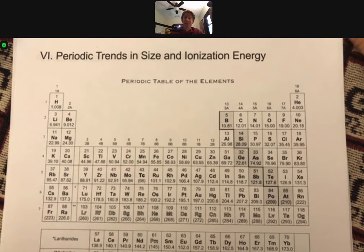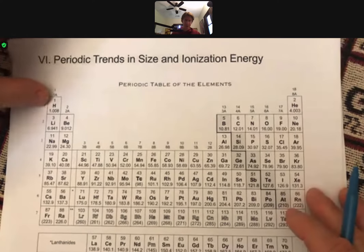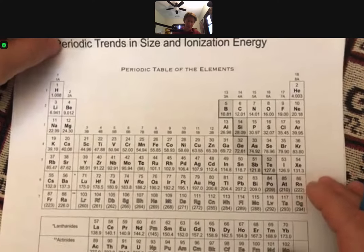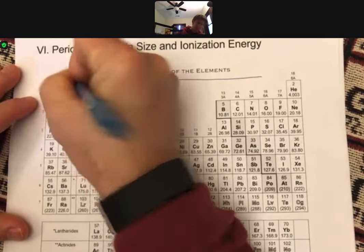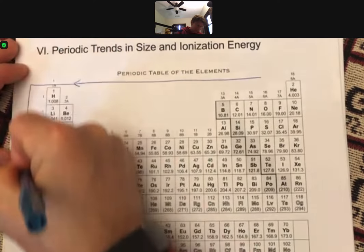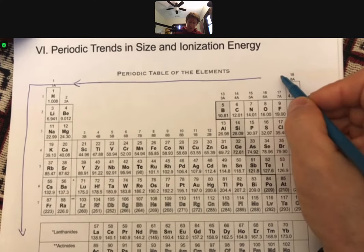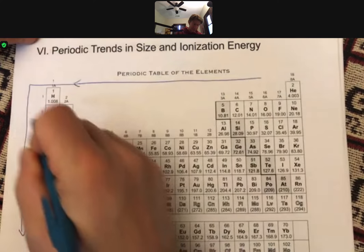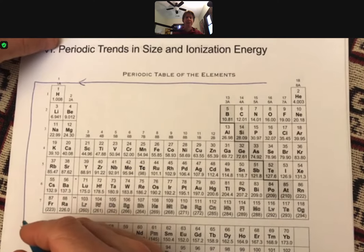Okay, last but not least, periodic trends in size and ionization energy. I've got our periodic table printed on your lecture outline handout, and I'm going to draw an arrow going this way, and I'm going to draw an arrow continuing from that and going down, and that is because as you go from the upper right to across and then down, in any fashion that you want, the size of the atoms increases.